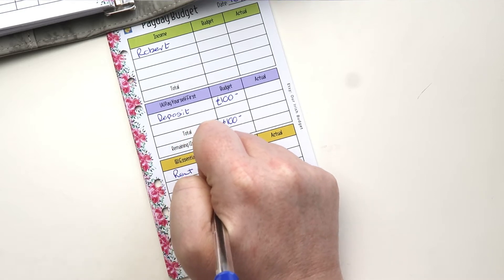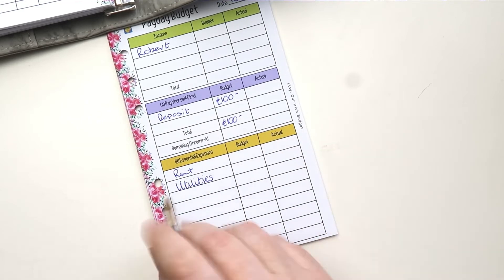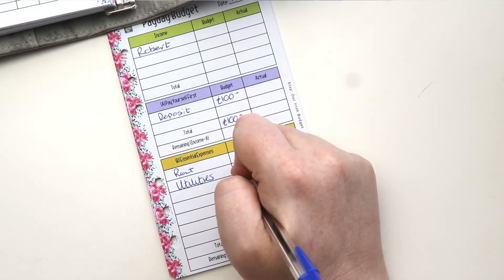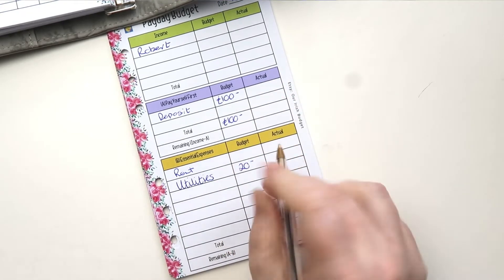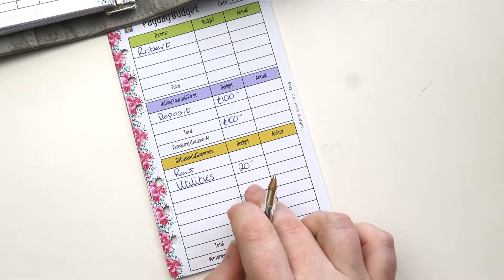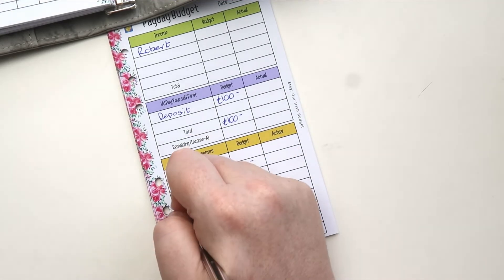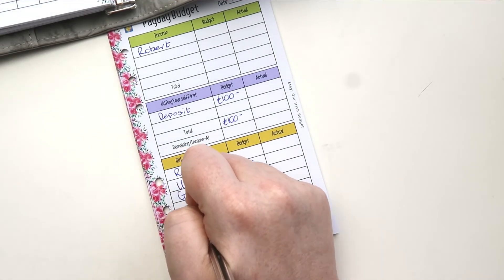We have a sinking fund for our utilities, so like a little saving pot for utilities. And every single week we put 20 euros in there. Then we have our food budget, so our grocery.